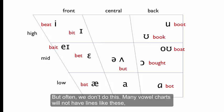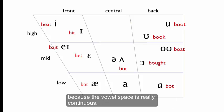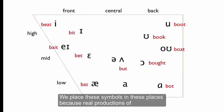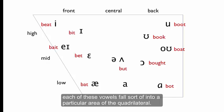But often, we don't do this. Many vowel charts will not have lines like these because the vowel space is really continuous. We place these symbols in these places because real productions of each of these vowels fall sort of into a particular area of the quadrilateral.